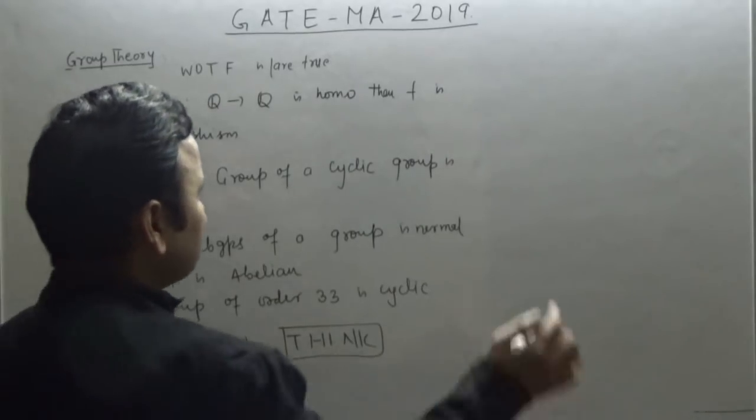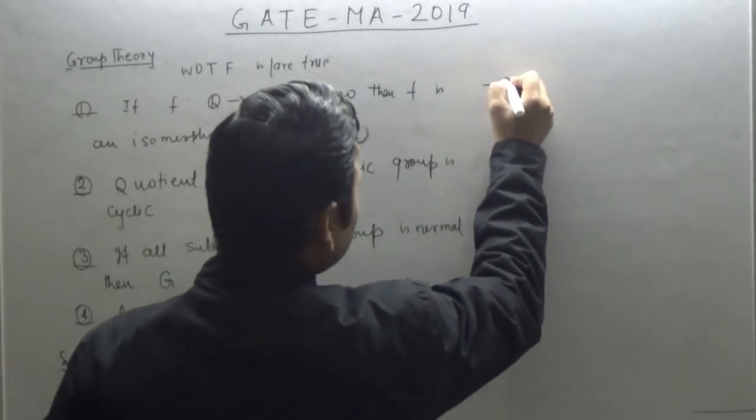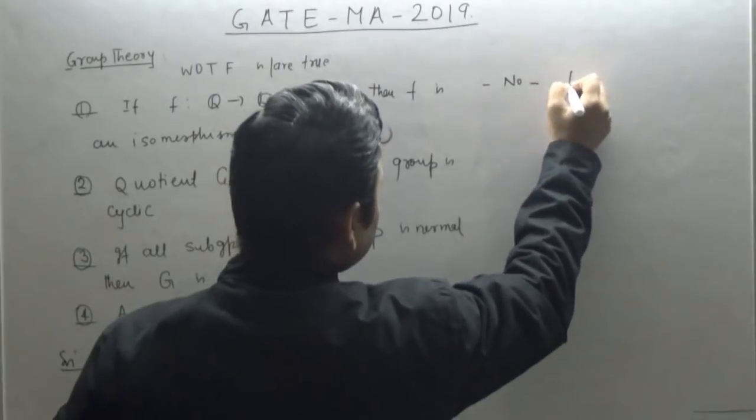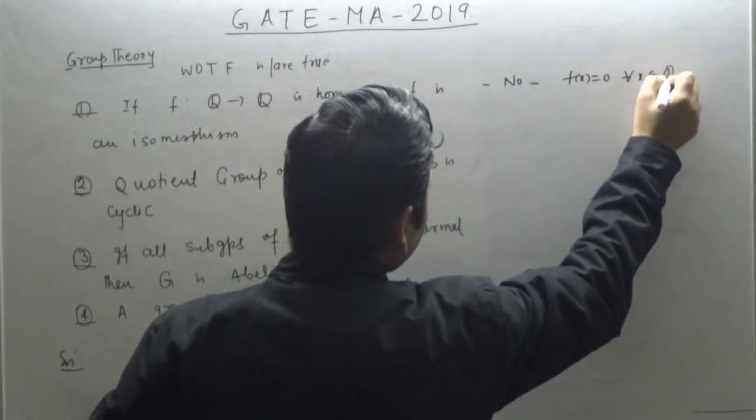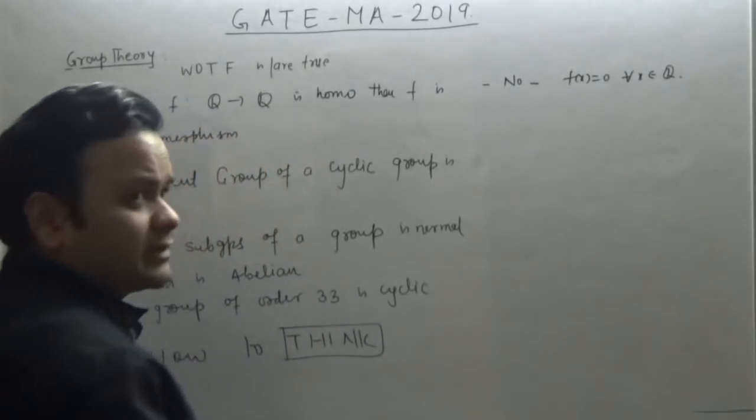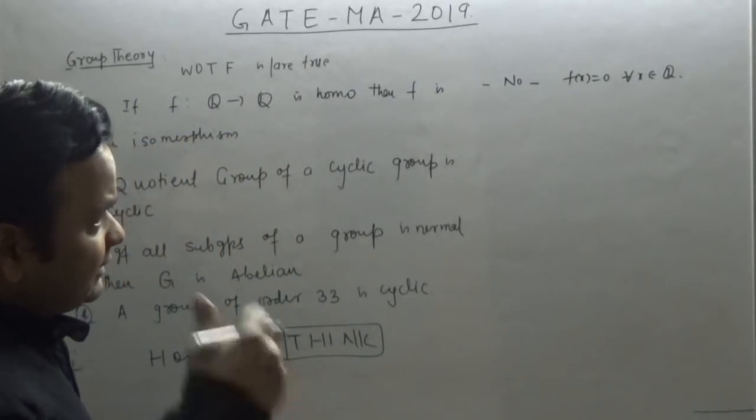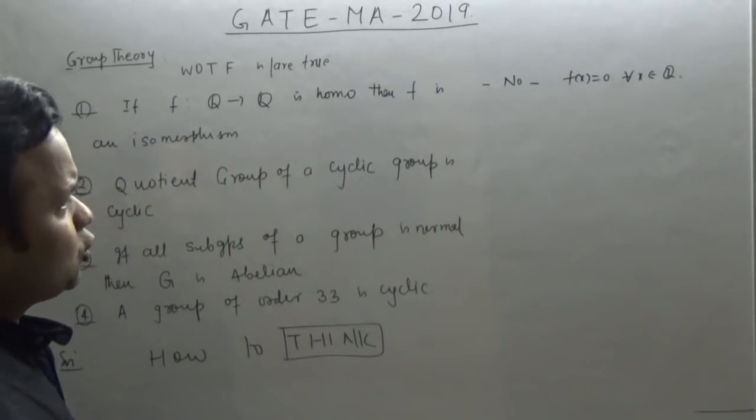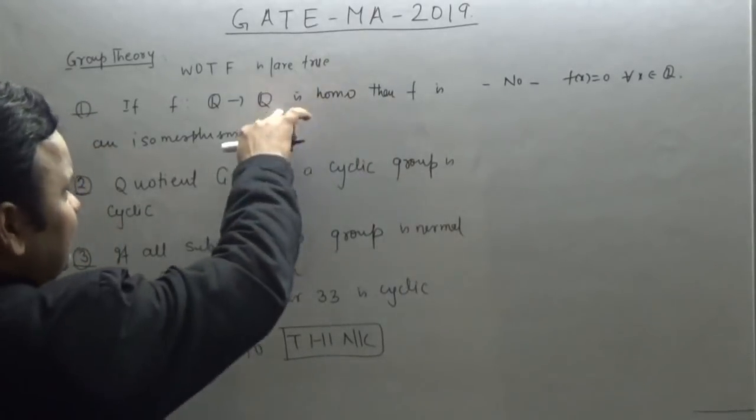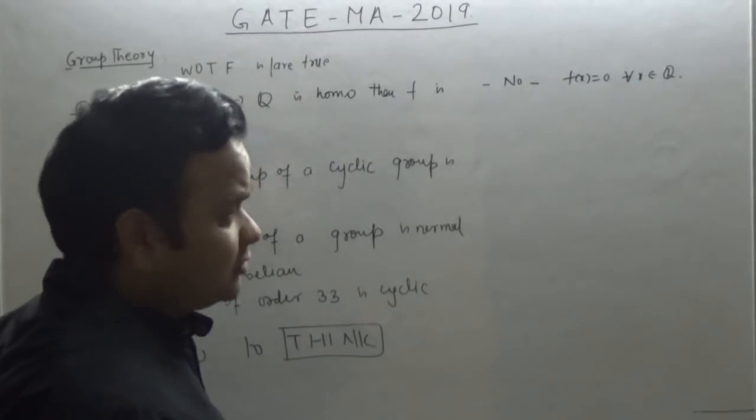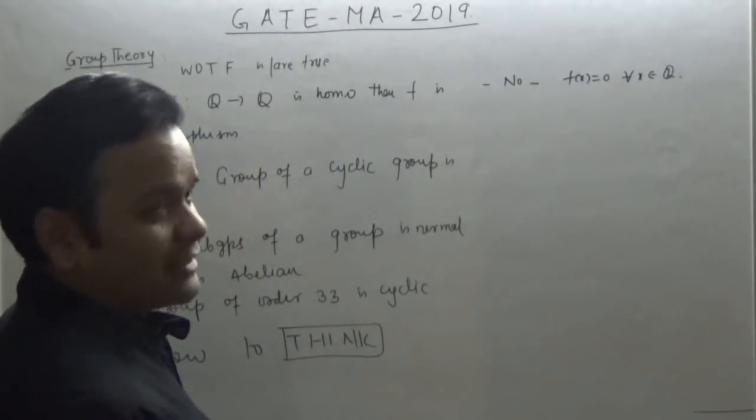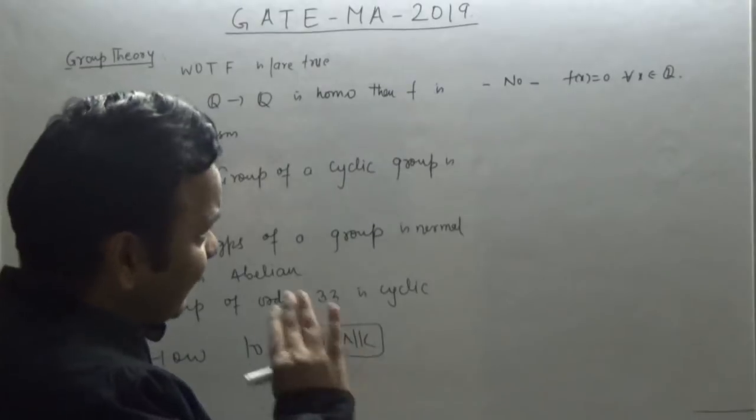No. Simple reason: f(x) equals zero. This is a group homomorphism where everything is identity, so this is not an isomorphism. But if this is saying this is a homomorphism which is not identically zero, then of course it is isomorphism.